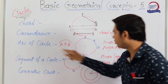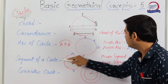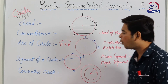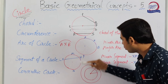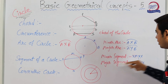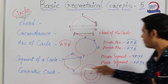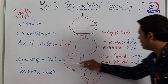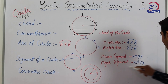Next: segment of the circle. If XY is a chord of the circle, it divides the circular region into two parts. The smaller part is called the minor segment and the larger part is called the major segment. XMY is the minor segment and XNY is the major segment.